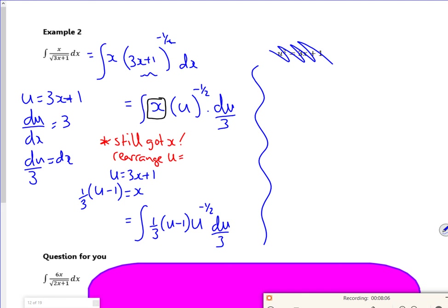So it will give me the integral of a third, u minus 1, u to the minus 1 half, du over 3. If I tidy up now, so I've done something extra. I've replaced the x, but I've still got to tidy up. So the third and the third is a ninth. Now, if I do u to the power 1 times by u to the power minus 1 half, it gives me u to the half. And then I've got my ninth again, but it's going to be a minus this time. So I've got a third, a third, a minus 1 times u to the minus 1 half. So that's minus a ninth, u to the minus 1 half, du over 3.